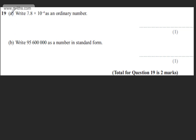This is question number 19. In part A, we're asked to write 7.8 times 10 to the power of minus 4 as an ordinary number. The question carries one mark. This is going to be 0.00078.